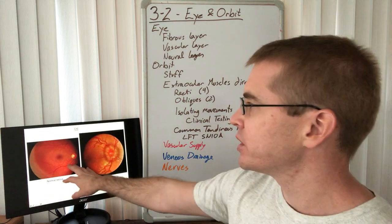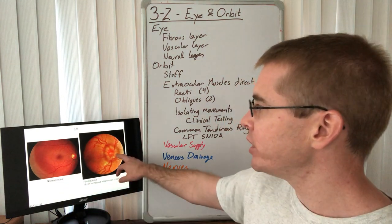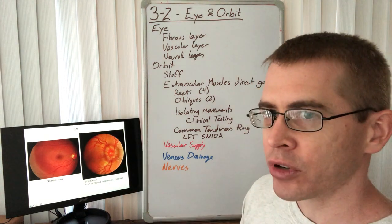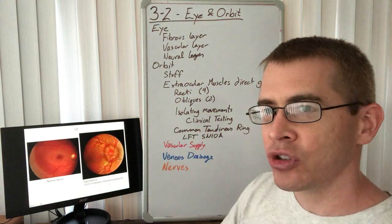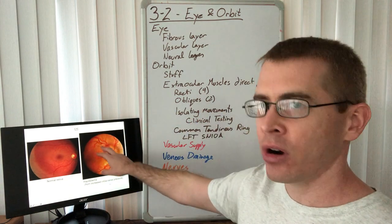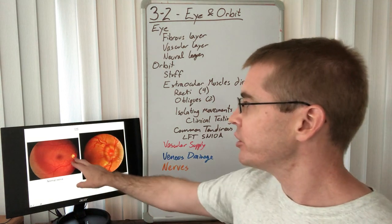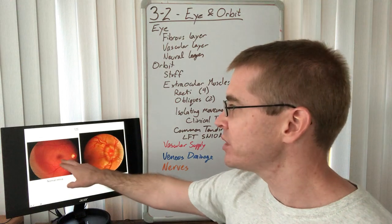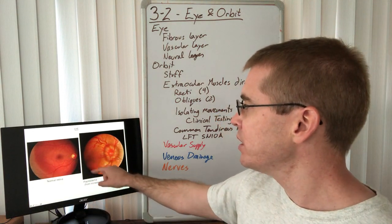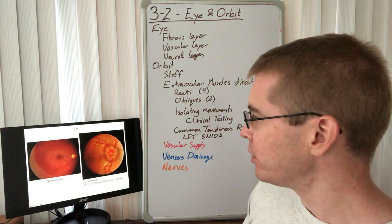Looking at actual ophthalmoscope images, we can see a normal retina compared to an example of papilledema, where elevated intracranial pressure pushes blood into the eye, engorging the retinal arteries. The optic disc appears swollen. In the normal image, there is a small optic disc with a clear fovea centralis, whereas in papilledema the fovea centralis is overcome by those engorged retinal arteries.